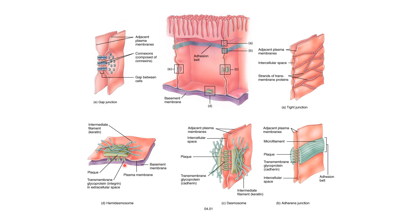Desmosomes are present between two cells, with proteins linked internally to the cytoskeleton and fibers provided by both cells, attaching to the membranes. Hemidesmosomes are on the base of the cell attached to the basement membrane — proteins are only provided by the cell, since the basement membrane is non-living extracellular material and cannot provide proteins.